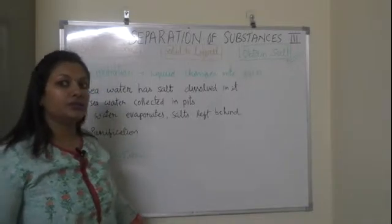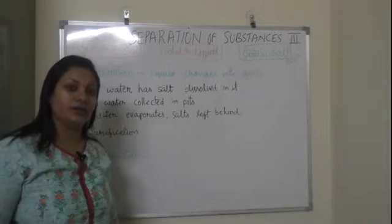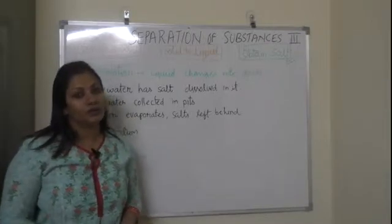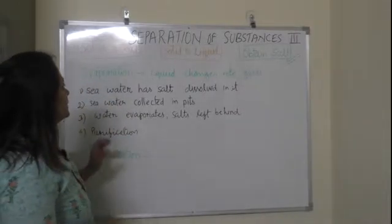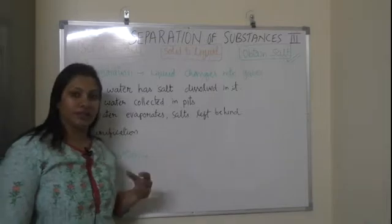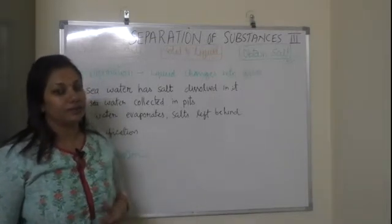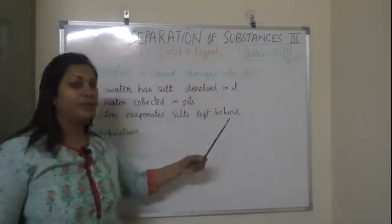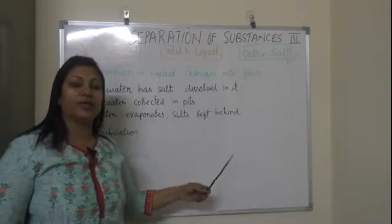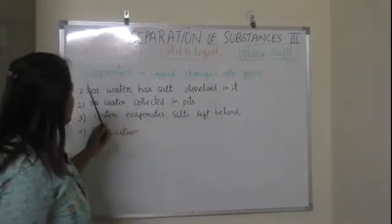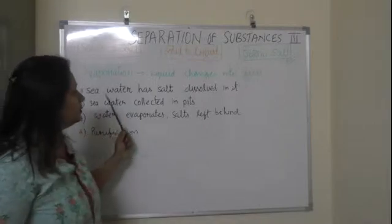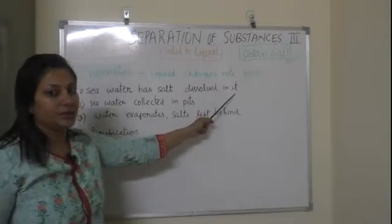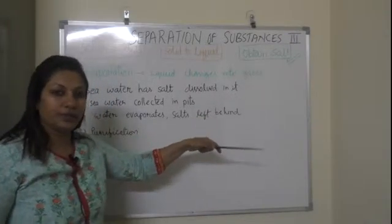We use a reservoir of water — seawater has a high percentage of salt. But how do we separate that salt? This is again a part of separation of substances. Seawater has salt dissolved in it — we all know that water has namak (salt) which is completely mixed in it, just like sugar is also completely dissolved in water.